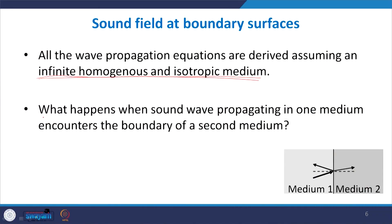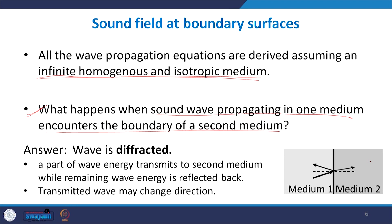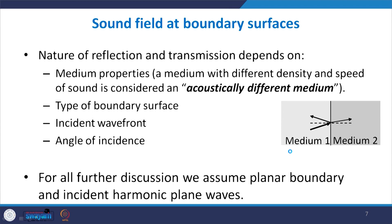But what happens when a sound wave propagating in one medium encounters the boundary surface of a second medium? The wave gets diffracted — as it hits the boundary, some part of the wave energy goes back into the first medium as a reflected wave, and some part enters into the second medium, generally changing direction. So the wave gets divided: some part goes back, some part enters the new medium.